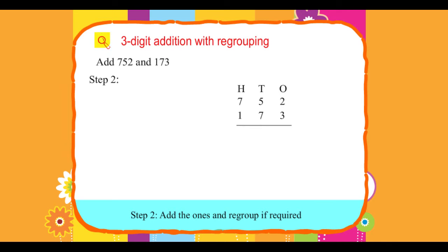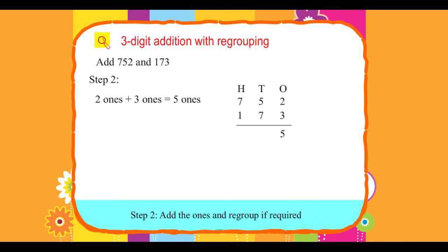Step 2: Add the ones and regroup if required. 2 ones plus 3 ones equals 5 ones.